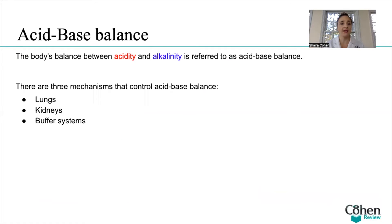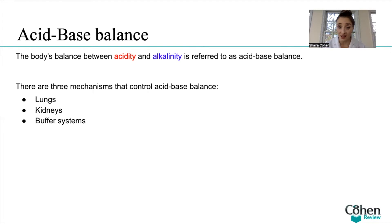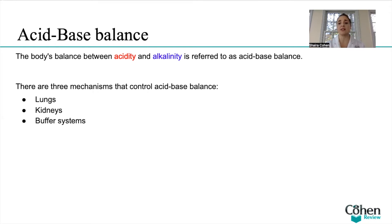Acid-base balance refers to the body's balance between acidity and alkalinity. There are three mechanisms that primarily control this balance: number one, the lungs through breathing and exhalation; number two, the kidneys through urine; and number three, buffer systems. I won't go into much detail on buffer systems, but I do want you to understand the function of the lungs and kidneys in keeping acid-base balanced.